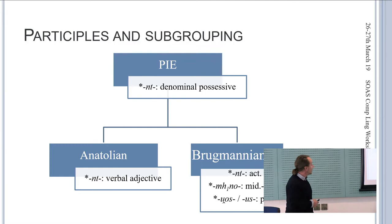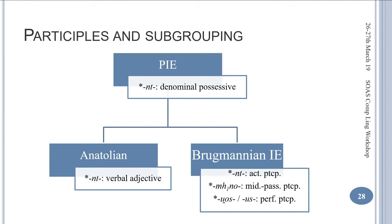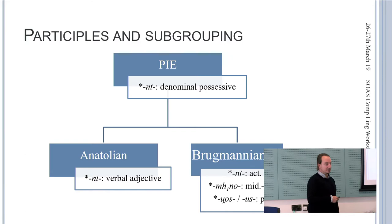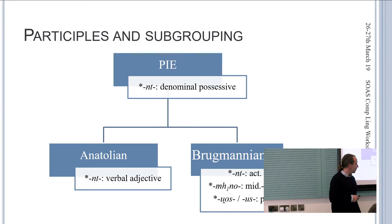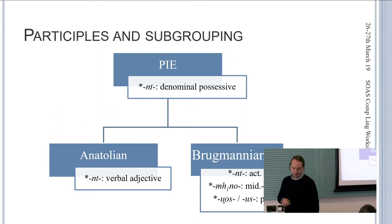Here is the development: we start with the nominal possessive NT; in Anatolian we get the verbal adjective; and Brugmanian Indo-European — which now includes Tocharian — has the innovation of associating NT with active verbs, mchno with middle verbs, and was-us with the perfect. And here is a slight twist: the origin of the perfect participle. Here I follow another of my teachers, Jeremy Rao.